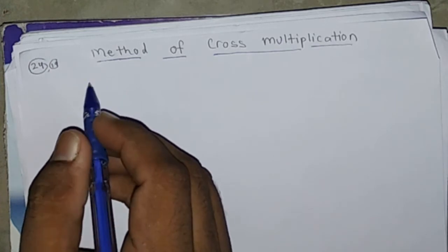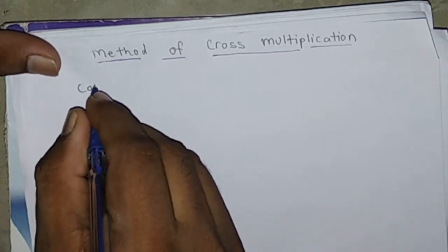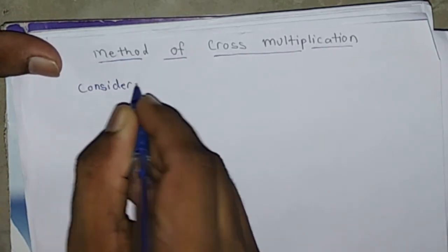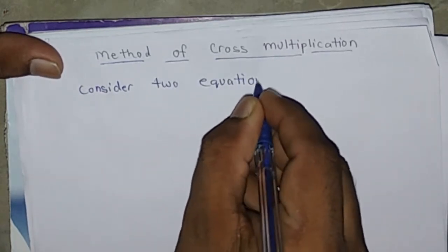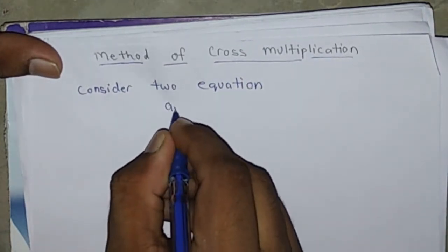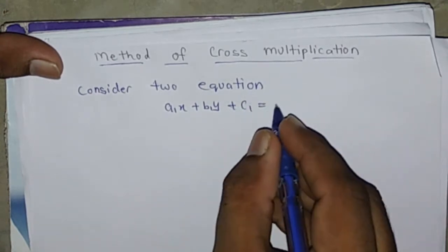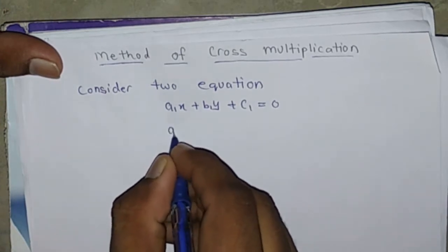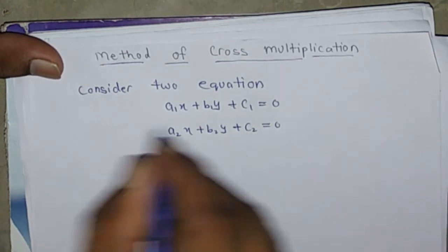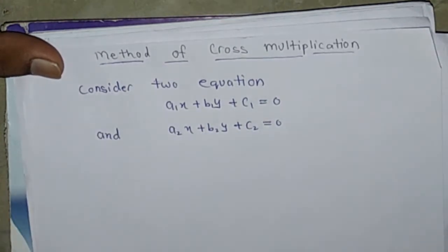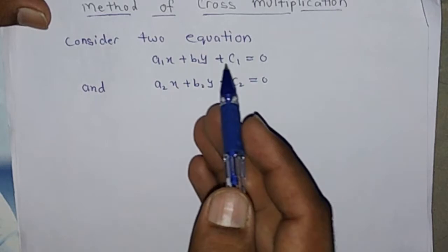Consider two linear equations: A1x plus B1y plus C1 equals 0, and A2x plus B2y plus C2 equals 0. These are two linear equations in which the RHS term is 0.